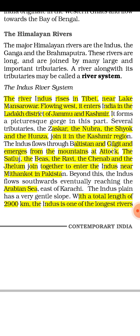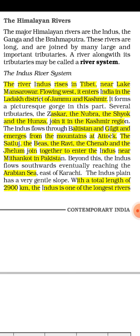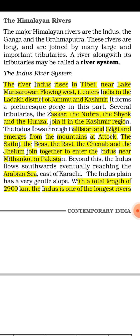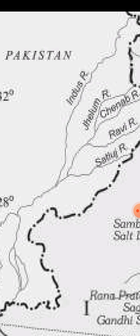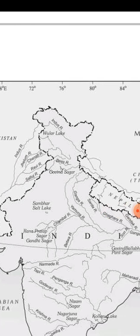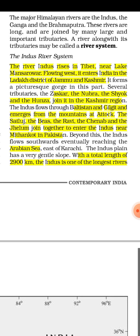The Satluj, Beas, Ravi, Chenab, and Jhelum join together to enter the Indus near Mithankot in Pakistan. These are the tributaries of the Indus river from Pakistan. Zaskar, Nubra, Shyok, and Hunza are the tributaries from the Kashmir region, while Satluj, Beas, Ravi, Chenab, and Jhelum merge with the Indus at Mithankot in Pakistan.